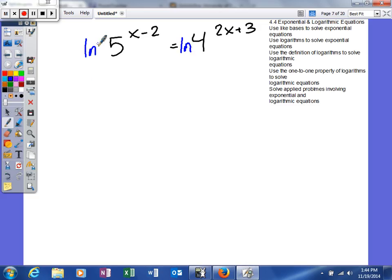Now, as you see here, I have the natural log of 5 to the x minus 2 power is equal to the natural log of 4 to the 2x plus 3 power. Now, neither of these will cancel because this is a base of e and that's 5. This is a base of e and that's 4, so we can't cancel anything out, but we can use the power rule.